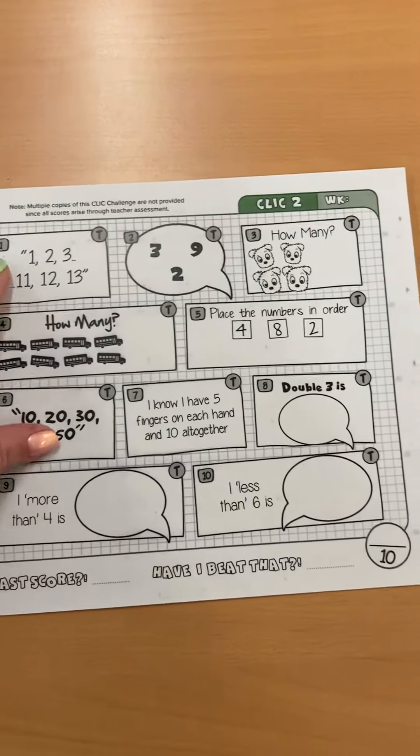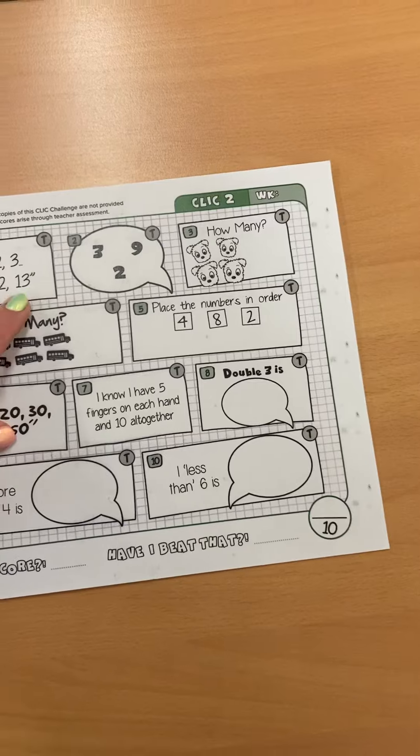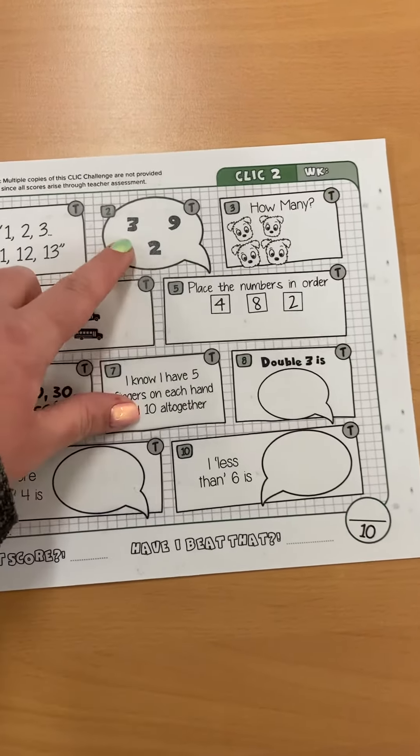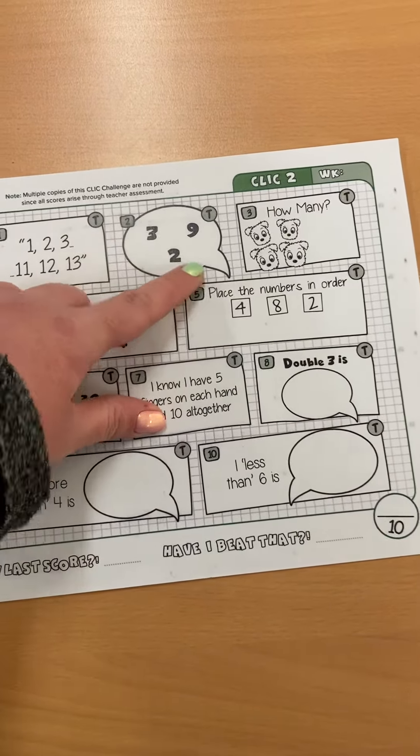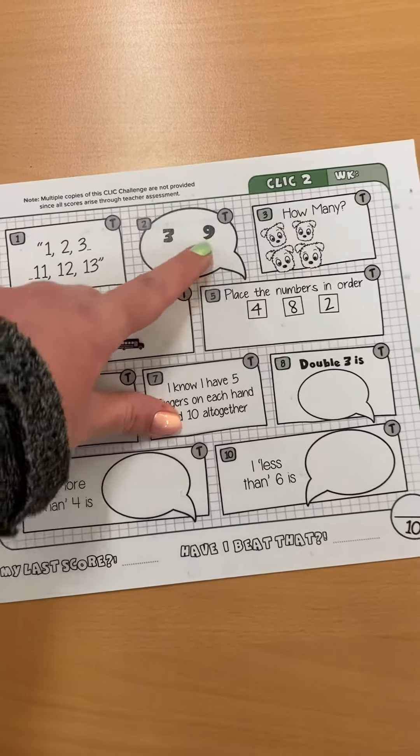And your first one you have to do is can you count all the way to 13? Then can you recognise these numbers? So tell your mums or dads or whoever's doing with you at home what these numbers are.